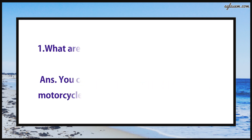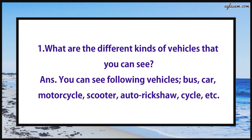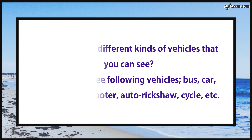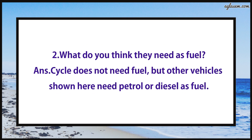Question number one says: What are the different kinds of vehicles that you can see? Answer: You can see the following vehicles — bus, car, motorcycle, scooter, auto rickshaw, cycle, etc. Question number two says: What do you think they need as fuel? Answer: A cycle does not need fuel, but the other vehicles shown here need petrol and diesel as fuel.